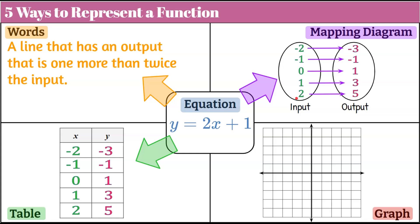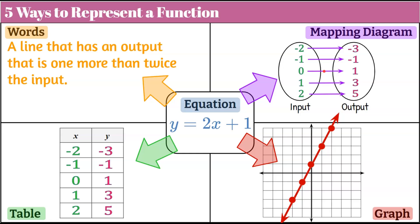Now let's finish and do our graph. We're going to take our points either from our mapping diagram or our table, or we could graph using the equation. Let's start by plotting these points: negative 2, negative 3; negative 1, negative 1; 0, 1; 1, 3; 2, 5. And graph our line. We could also have used our equation in slope-intercept form — a y-intercept of 1, then rise 2, run 1 for our slope. Or you could have graphed your inputs and outputs from your mapping diagram.